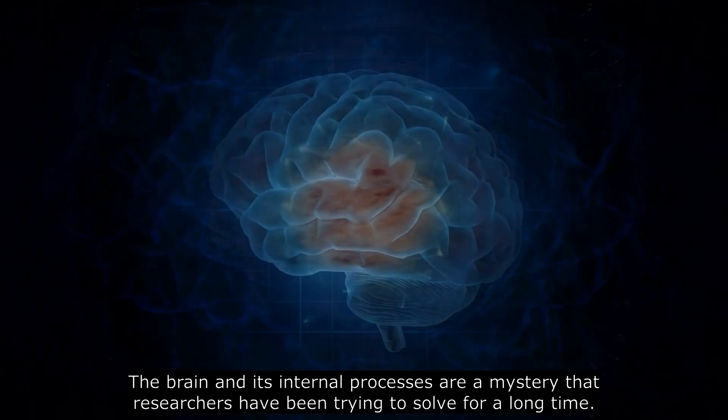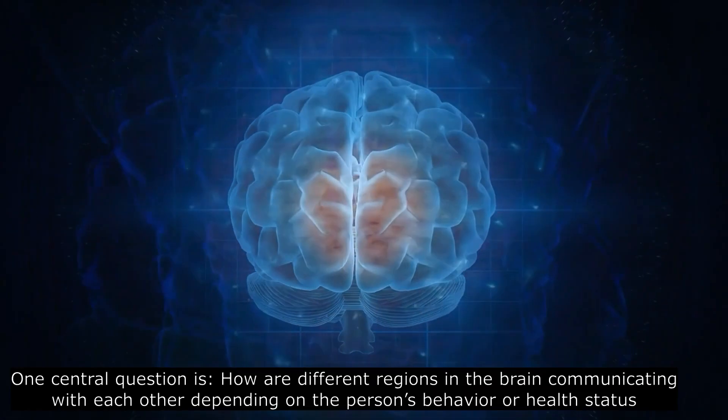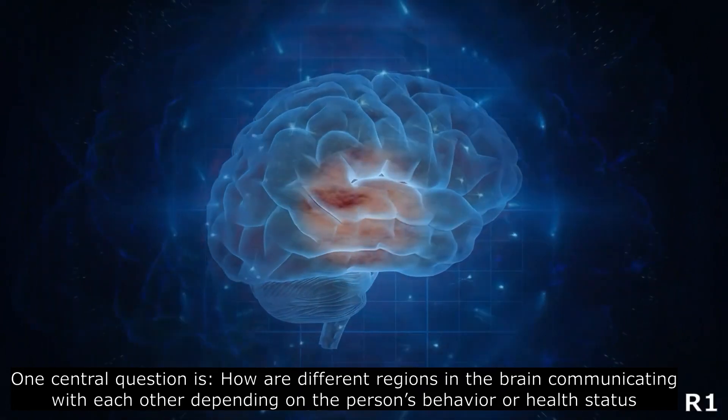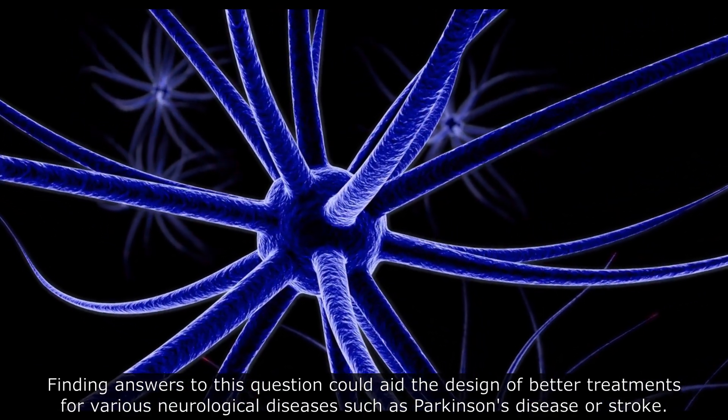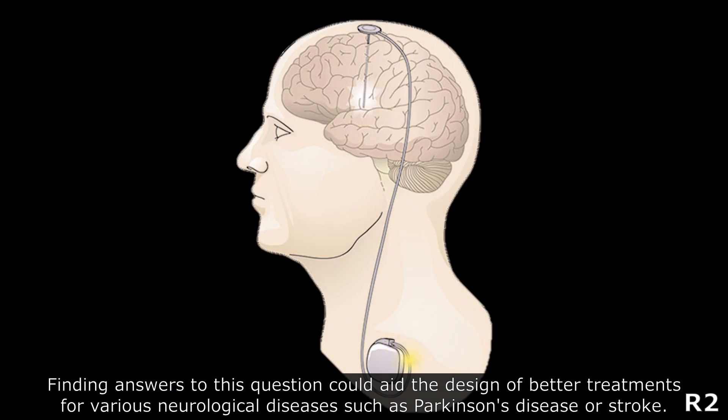The brain and its internal processes are a mystery that researchers have been trying to solve for a long time. One central question is how are different regions in the brain communicating with each other depending on the person's behavior or health status? Finding answers to this question could aid the design of better treatments for various neurological diseases such as Parkinson's disease or stroke.